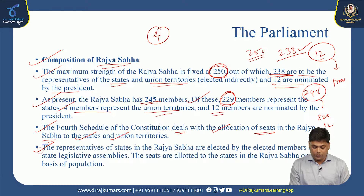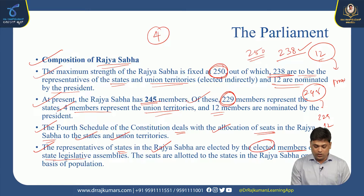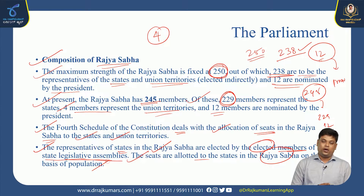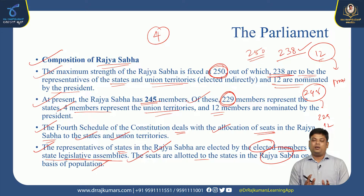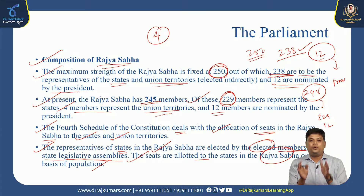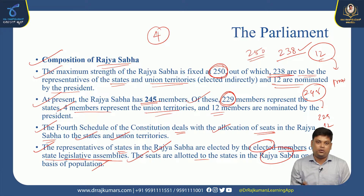The representatives of states in Rajya Sabha are elected by the elected members of the state legislative assemblies. Seats are allotted to the states in Rajya Sabha on the basis of population — that is, the number of MPs to Rajya Sabha is determined based on the proportion of the population of the particular state.